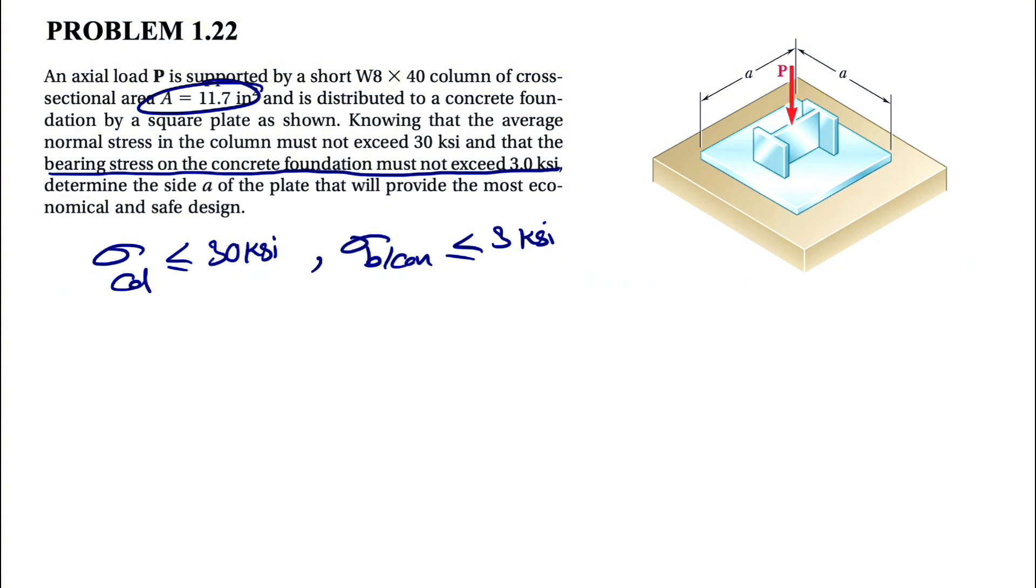We need to determine the side A of the plate that will provide the most economical and safe design. It will be economical when we have the least material used. In other words, for a plate A by A, we want the minimum A that also provides a safe design.